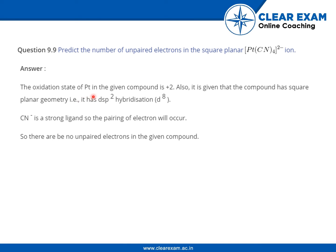The oxidation state of Pt in the given compound is +2. The entire CN part will constitute -4 charge, and the entire compound has -2 charge, so obviously Pt will contribute +2 charge. Also, it is given that the compound has square planar geometry.